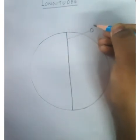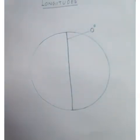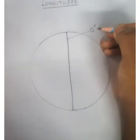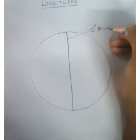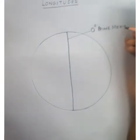Zero degree longitude. The name of this zero degree longitude is the prime meridian. So label it as 'Prime Meridian'.